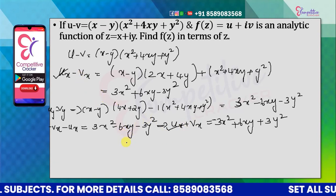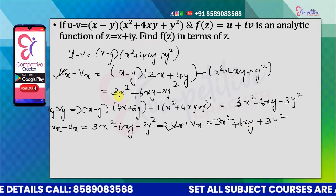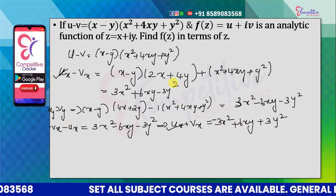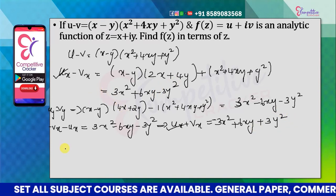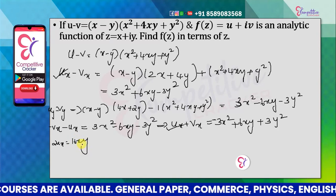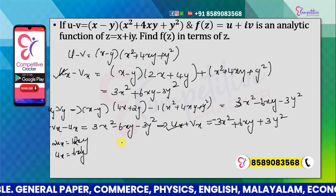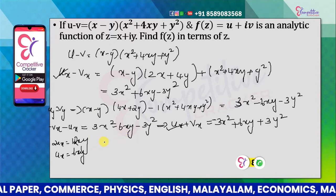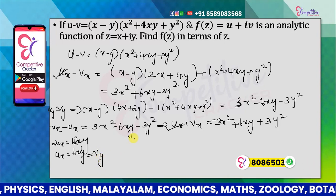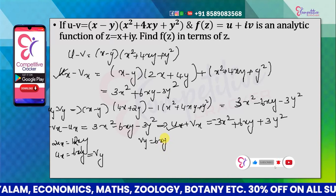So we can solve for ux. Adding the two equations: the 3x squared terms cancel, the 3y squared terms cancel, and we get 2ux equal to minus 12xy, so ux equals minus 6xy. Wait — balancing gives us 2ux equal to 12xy, so ux equals 6xy. Therefore, by Cauchy-Riemann, vy equals 6xy.